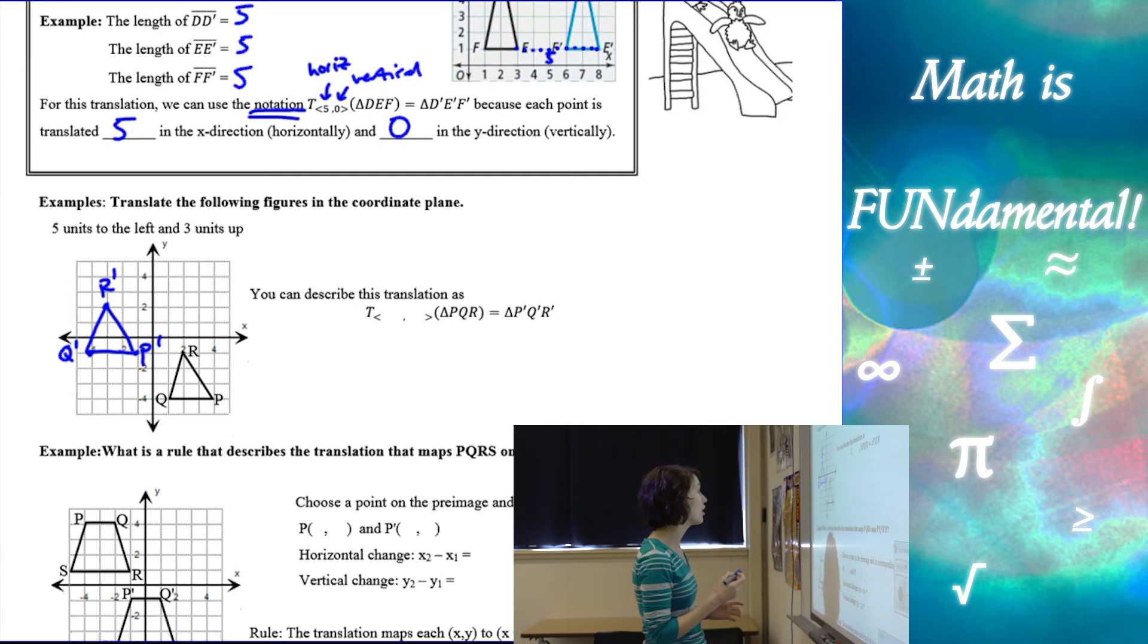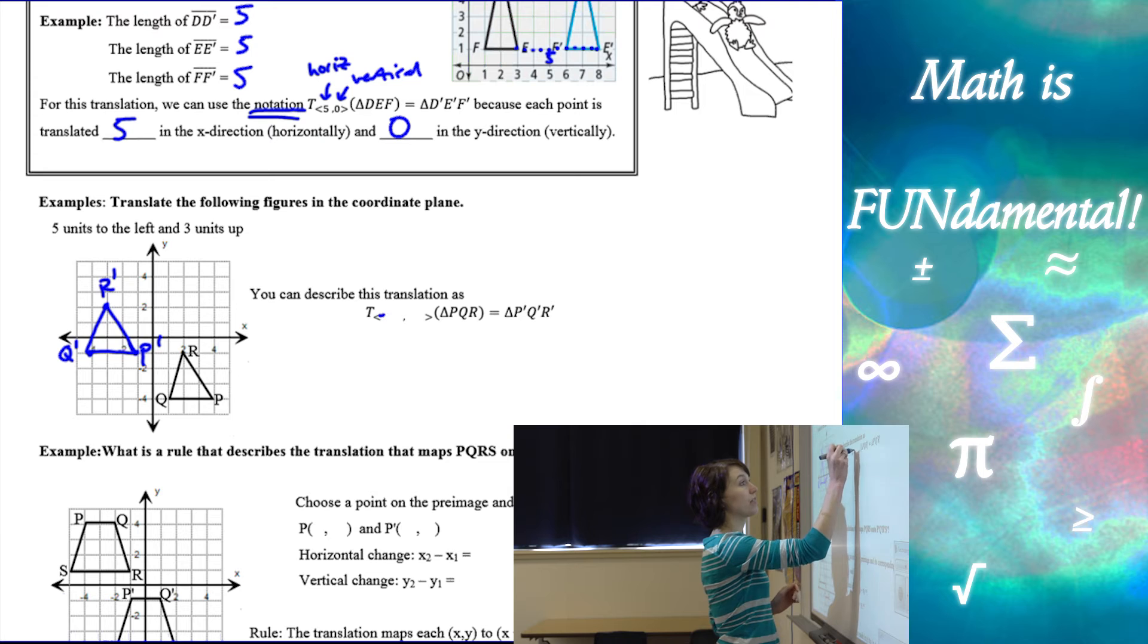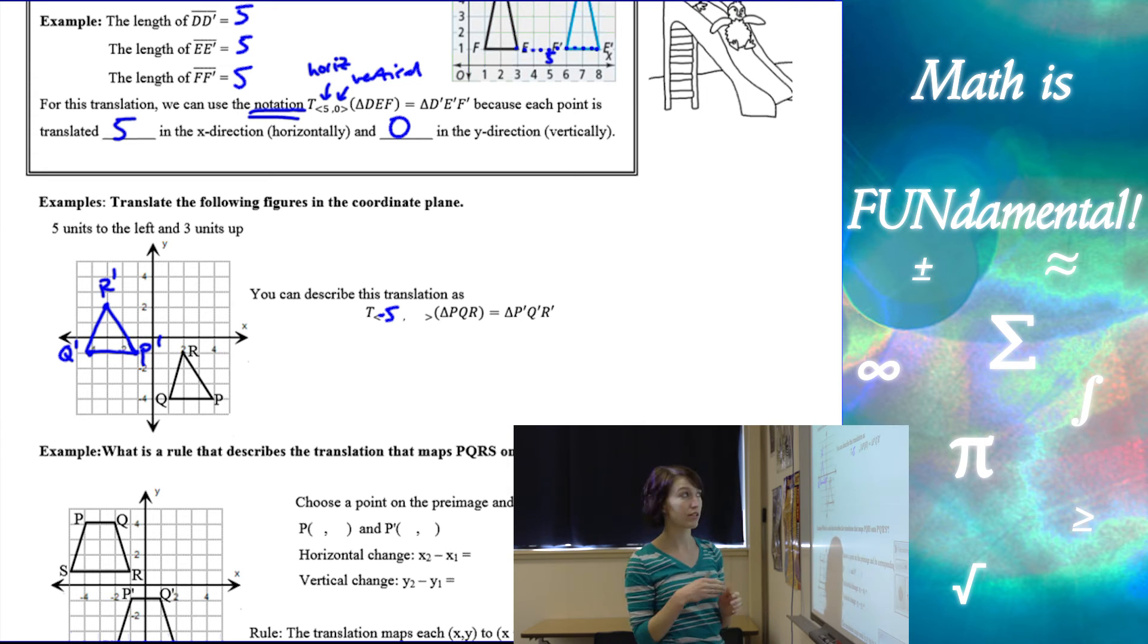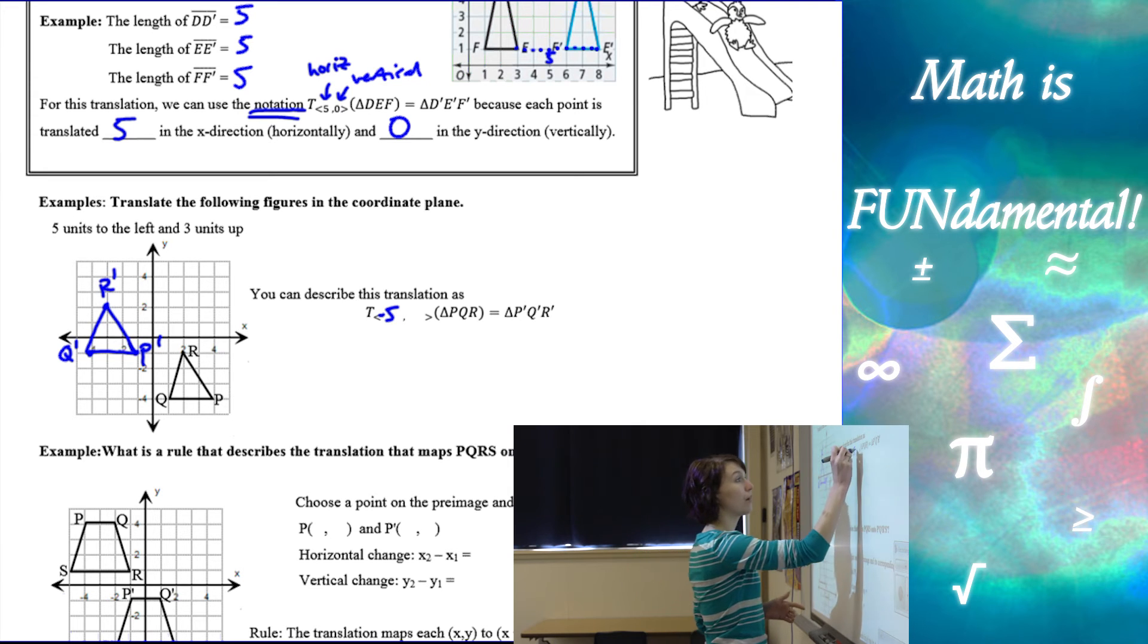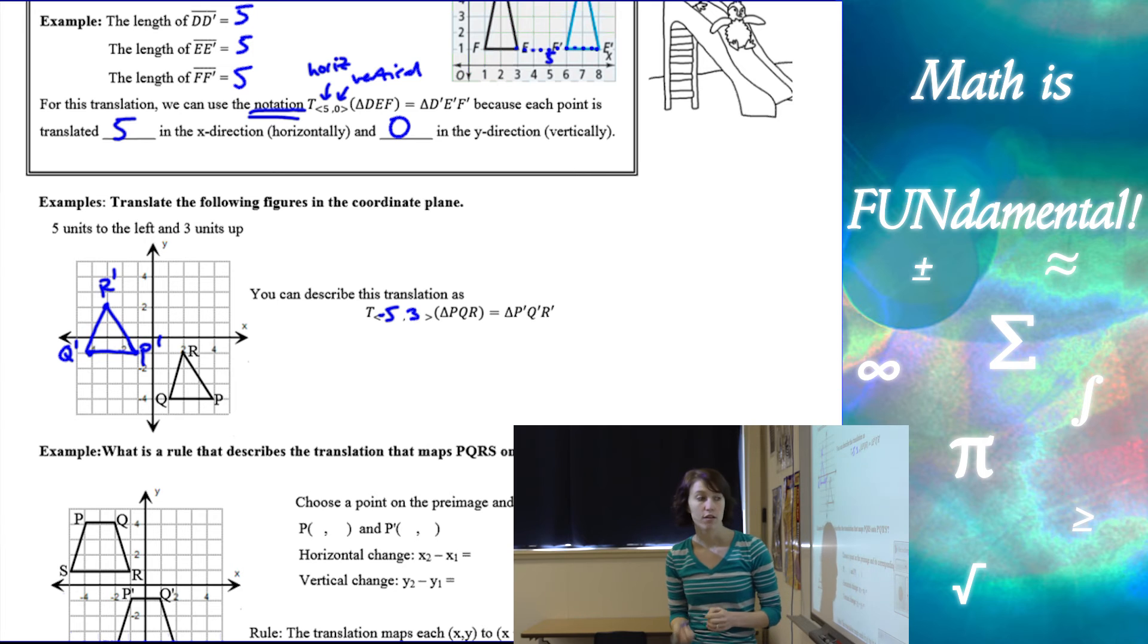You want to make sure that the image and the pre-image look like they're the same size and shape. So we can describe this translation as we went 5 to the left. Now that's the negative x direction. So it's going to be negative 5 horizontally. And we went up 3, which is positive 3 vertically.